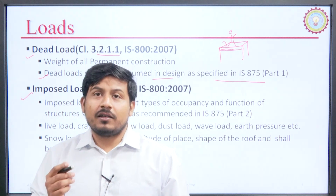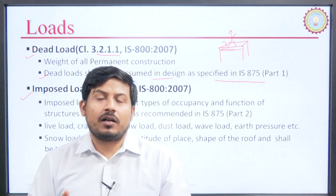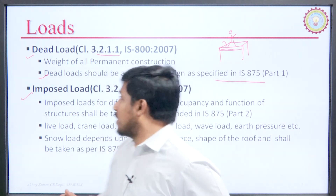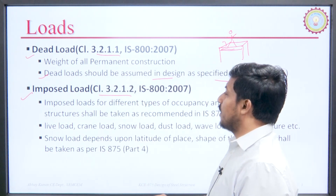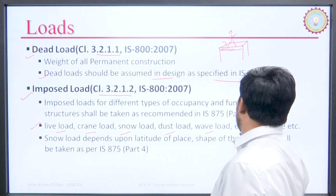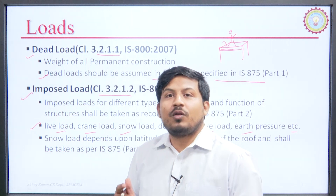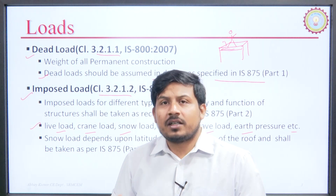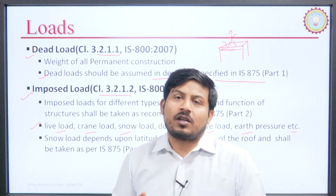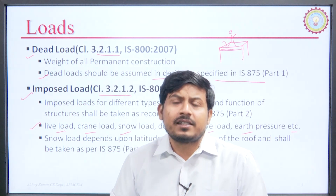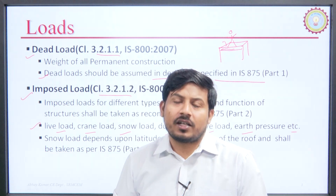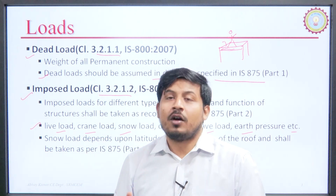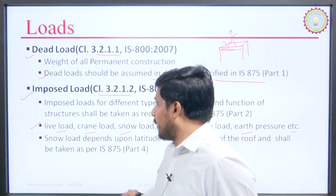Our IS code says in clause number 3.2.1.2 that imposed load includes live load, crane load, snow load, dust load, wave load, earth pressure, etc. We must think about what kind of loading is coming on the structure and whether its nature is temporary, occupant-type, or imposed — then it falls in the imposed load category.